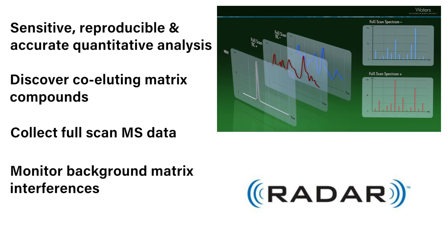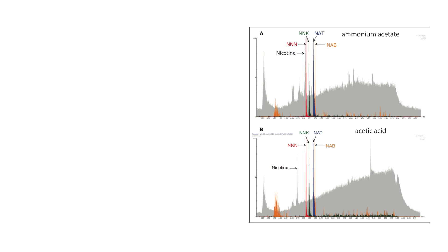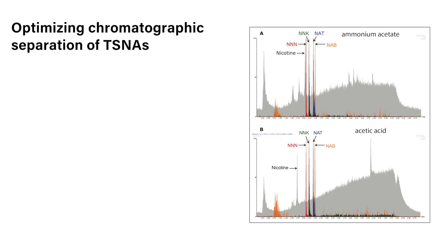The benefits of Radar are well illustrated in this UPLC MS-MS analysis of tobacco products. The analysis demonstrates optimizing the chromatographic separation of tobacco-specific nitrosamines, or TSNAs. The two figures highlight full-scan TIC chromatograms in gray and MRM chromatograms of the TSNAs in color.